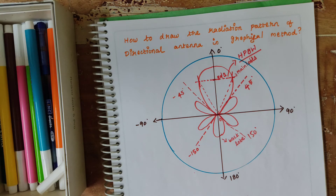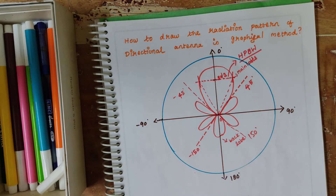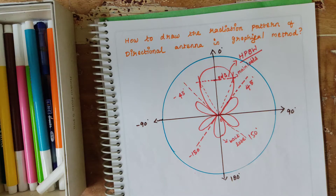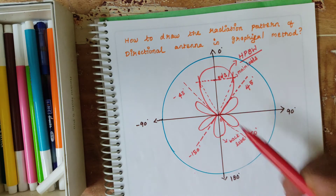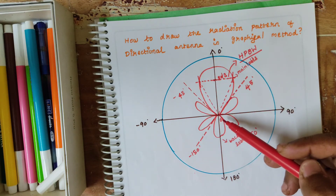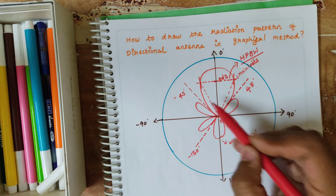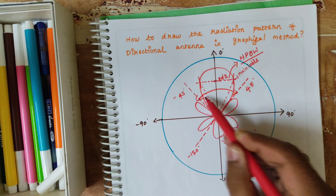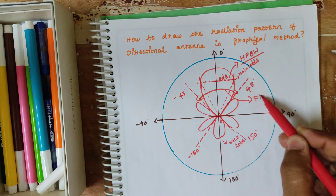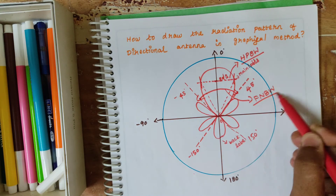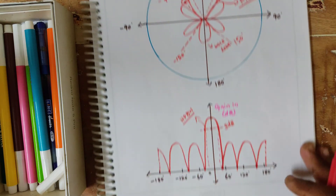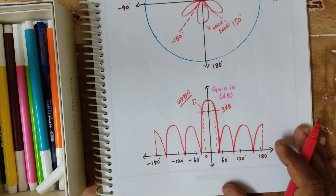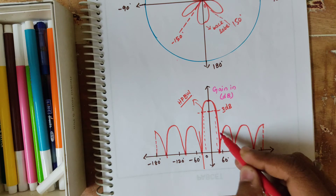Next we are seeing about first null beam width. The first null beam width is the whole width of the major lobe. We are taking the whole main lobe for first null beam width — from this angle to this angle we are having first null beam width. In graphical representation, the first null beam width is obtained here.